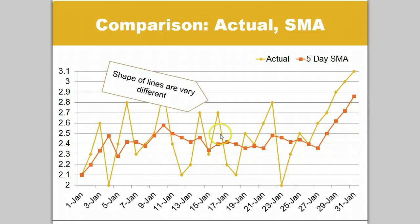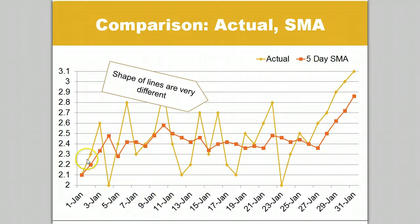When we compare the data lines on a graph, we see that the overall trends are similar, but the SMA exhibits two very different characteristics from the original data. One, it shows a drastically reduced rate of change, and two, it lags behind the actual changes.